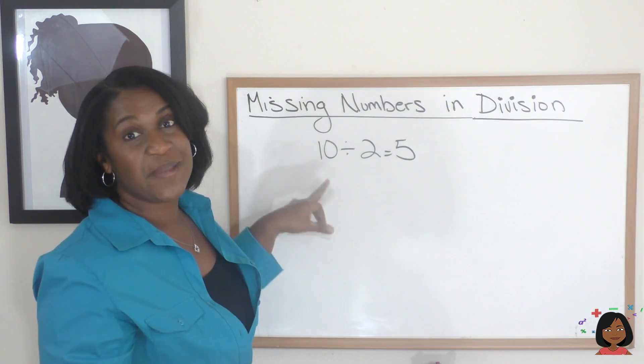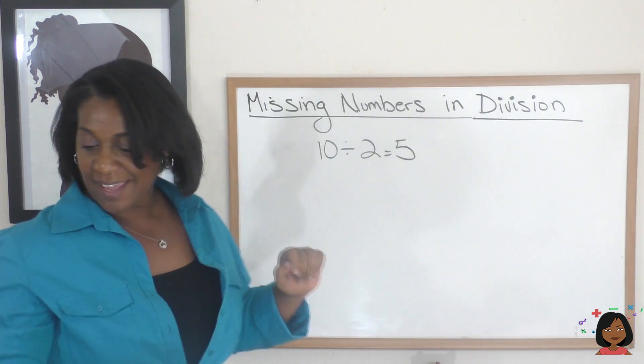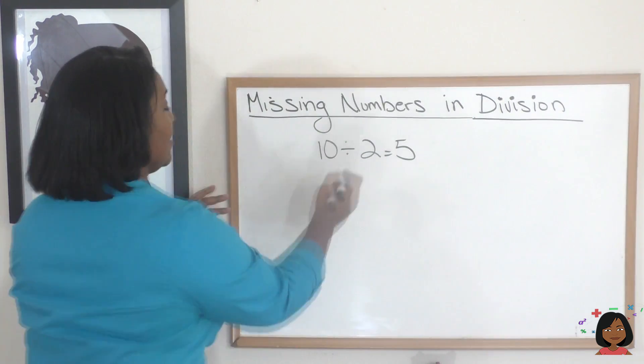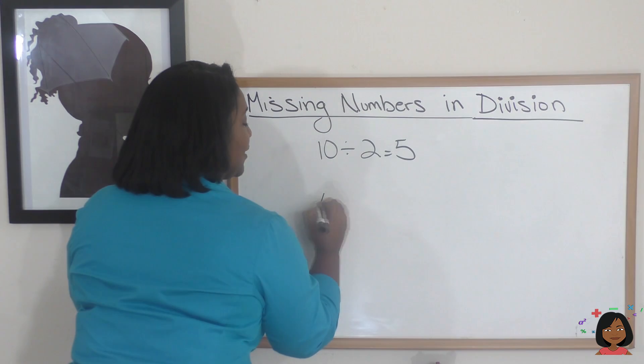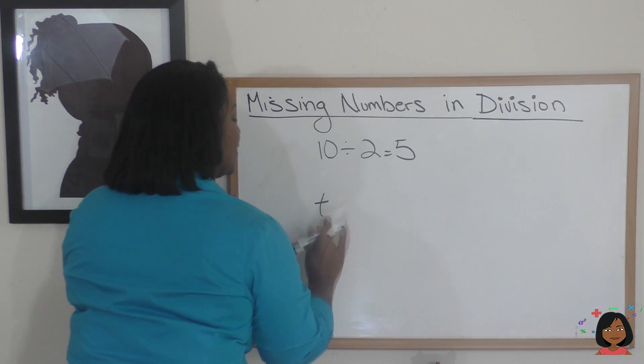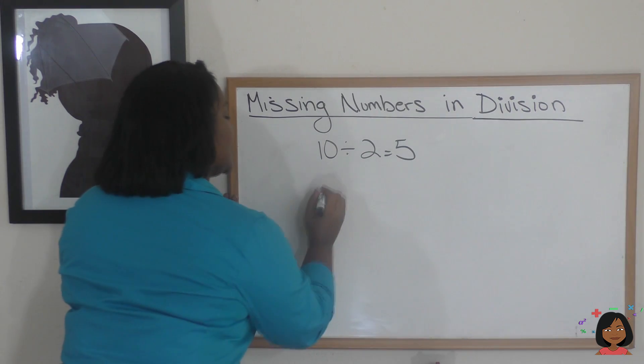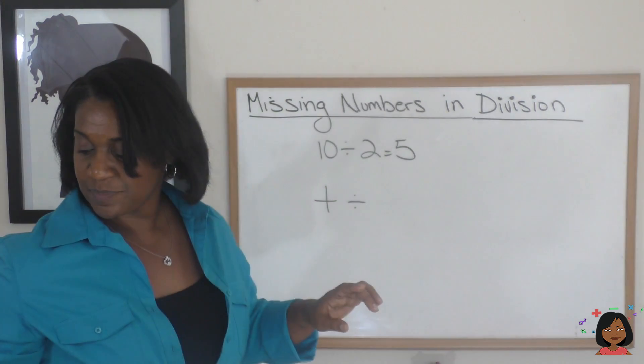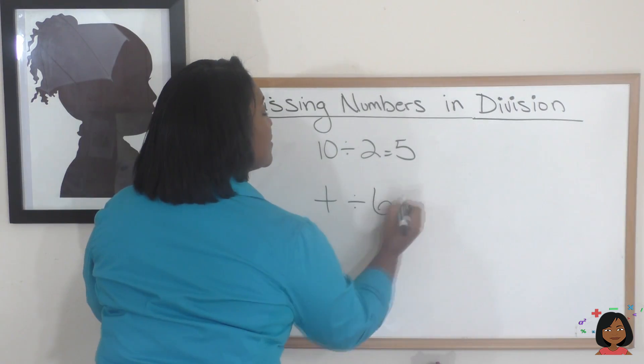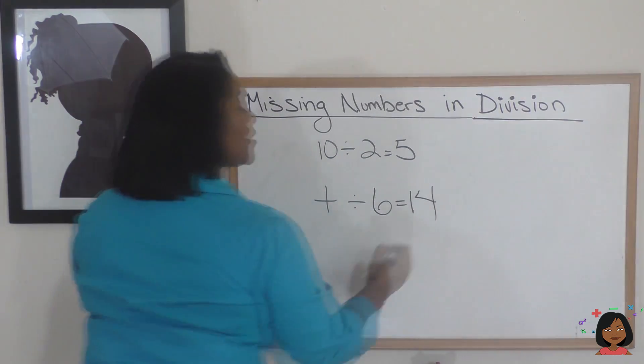Well, let's try it with a slightly bigger example. So let's say that we had our unknown is going to be the letter T. T, and we're going to divide T by the number 6, and that's going to equal 14.